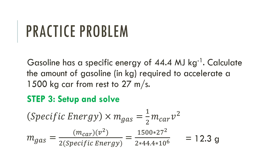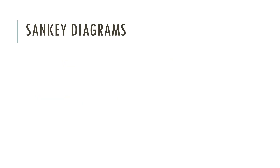Putting it all together — finding the kinetic energy and dividing by specific energy — we get 12 grams. Just 12 grams of gasoline should be enough to accelerate the car to 27 meters per second. A lot of times you're doing work and power problems and specific energy just adds one more factor-label step. Use the units to help out as always.